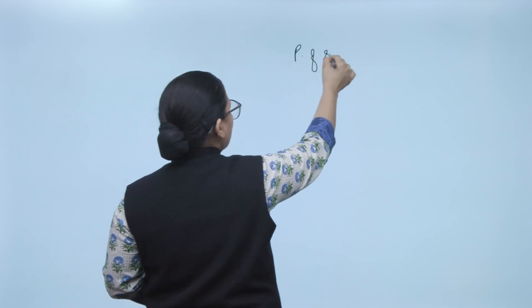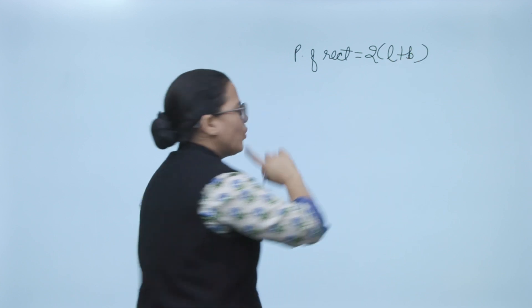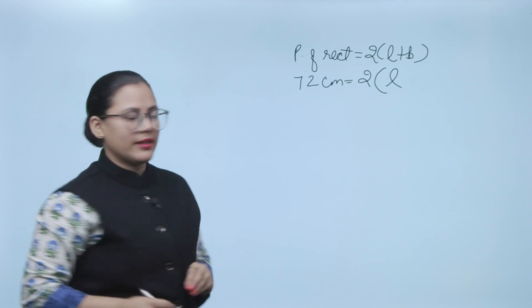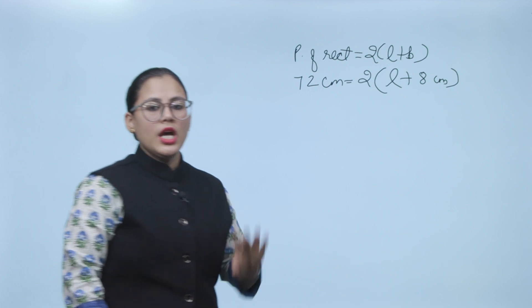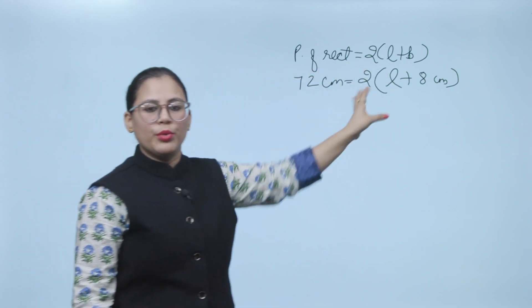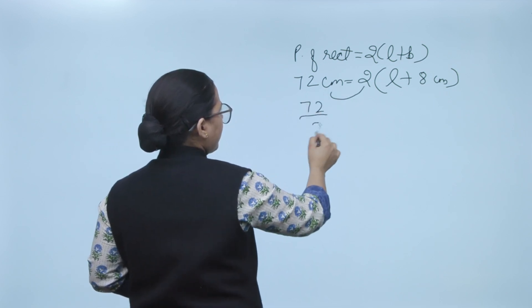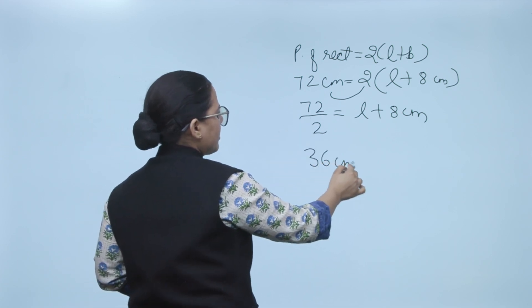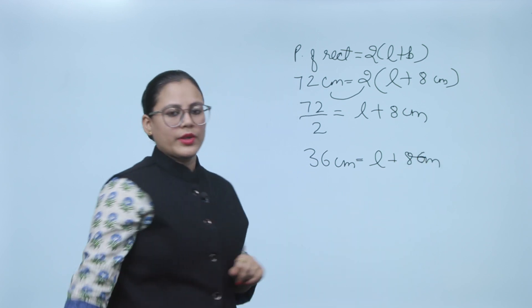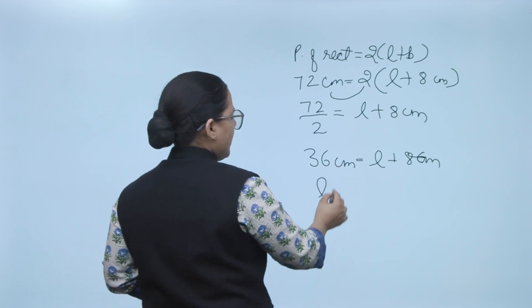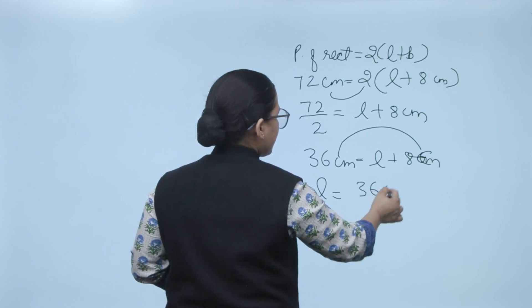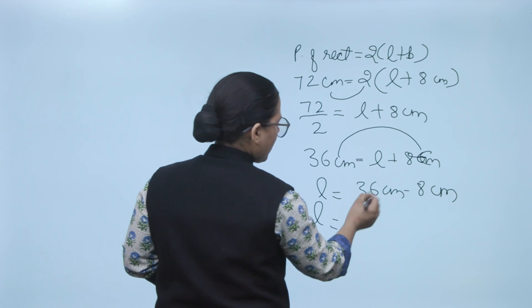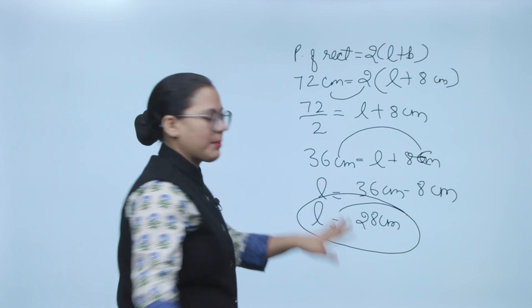You know: perimeter of rectangle = 2 × (length + breadth). Perimeter is 72 cm, breadth is 8 cm. Put the values into the formula: 72 = 2 × (length + 8). Divide 72 by 2 to get 36 = length + 8. Therefore, length = 36 − 8 = 28 centimeters.